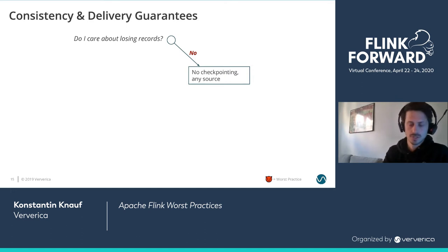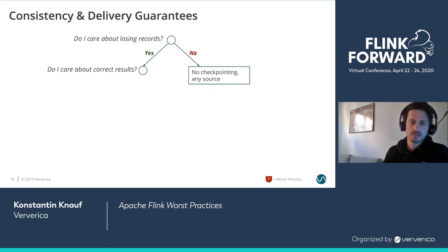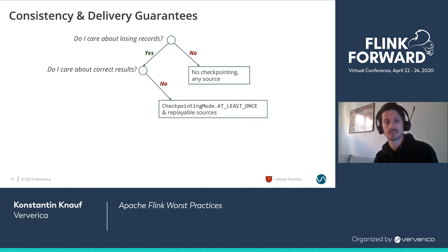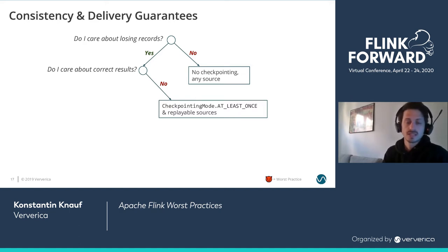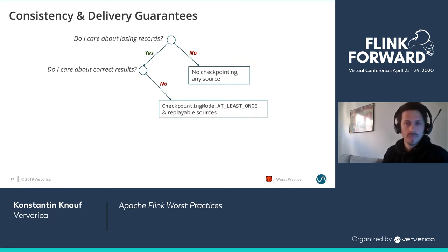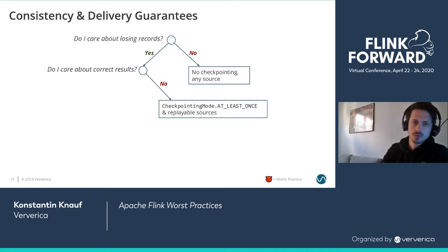If you do care about losing records, then you need to ask yourself another question: do you care about correct results? If you don't care about correct results, you can use Flink's checkpointing mode at-least-once. You still need to use replayable sources — something like Kafka, Kinesis, or a file system. Most sources in Flink are replayable. This is because if you don't want to lose records, Flink needs to be able to reprocess records after a failure, so the source must be replayable.